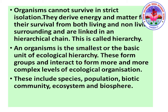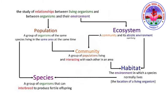We're going to study species, habitat, and ecosystem in detail. The study of the relationship between living organisms and their environment deals with the ecosystem. An ecosystem is nothing but a community and its abiotic environment. A community is a group of populations living and interacting with each other in an area.